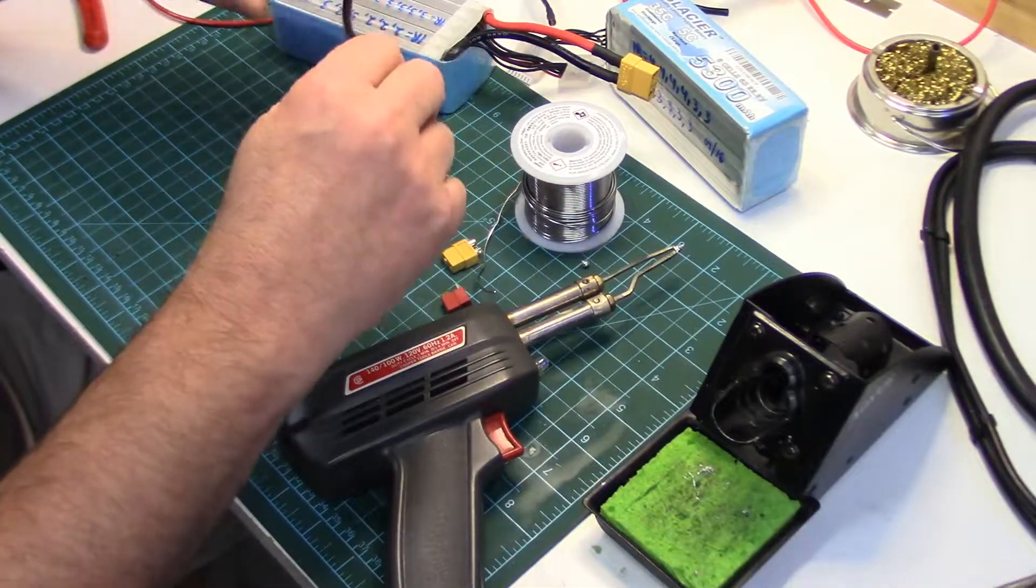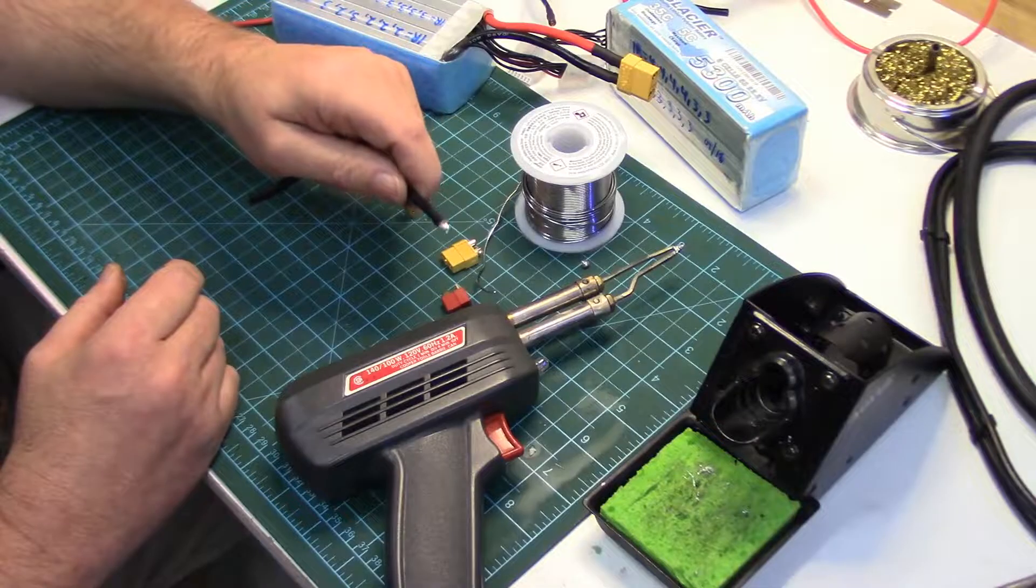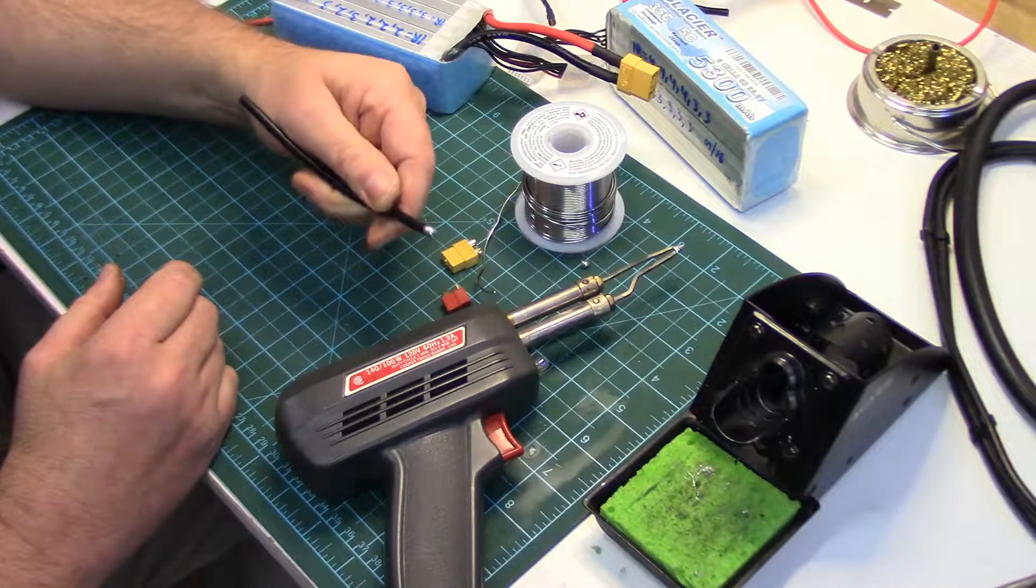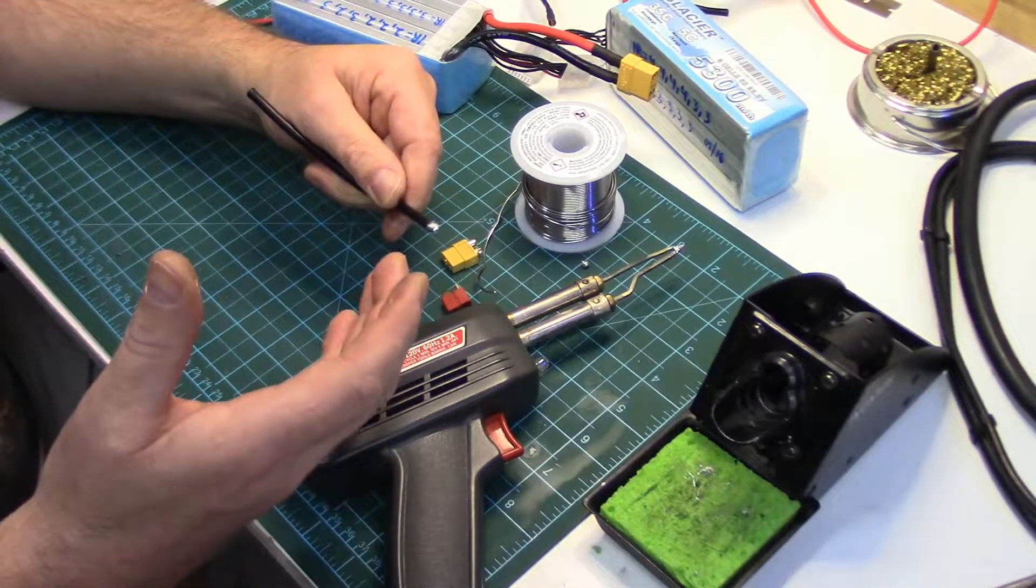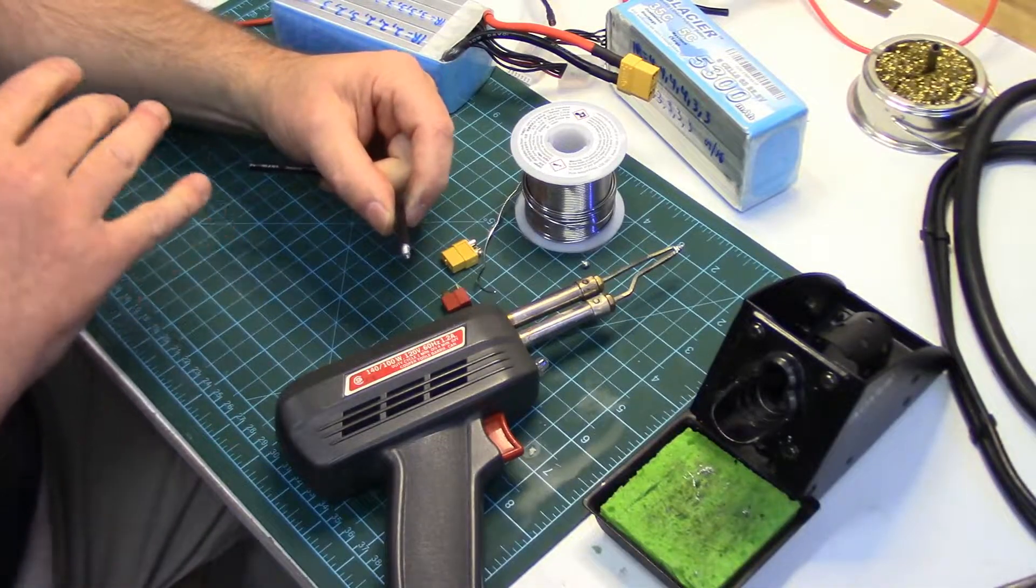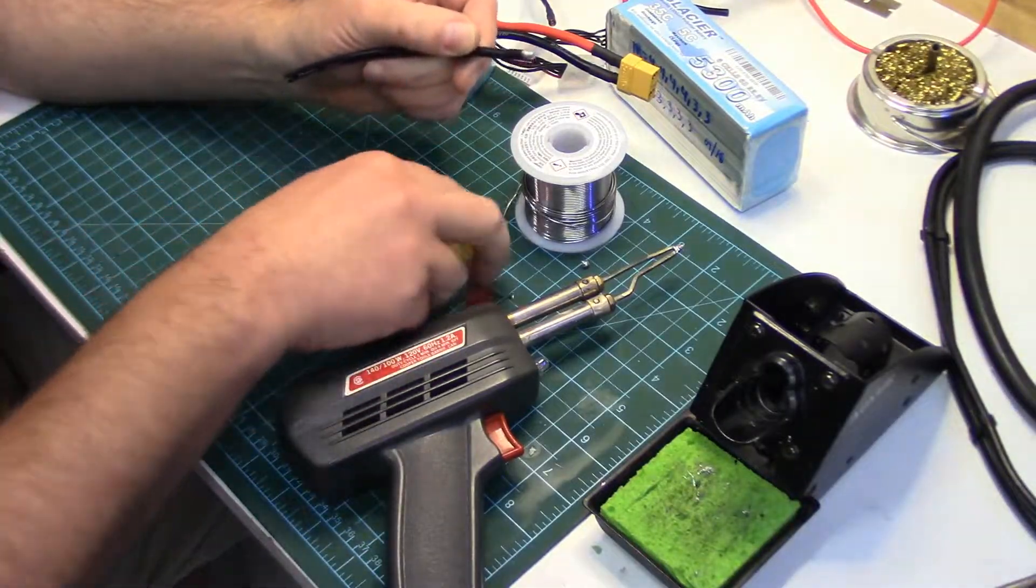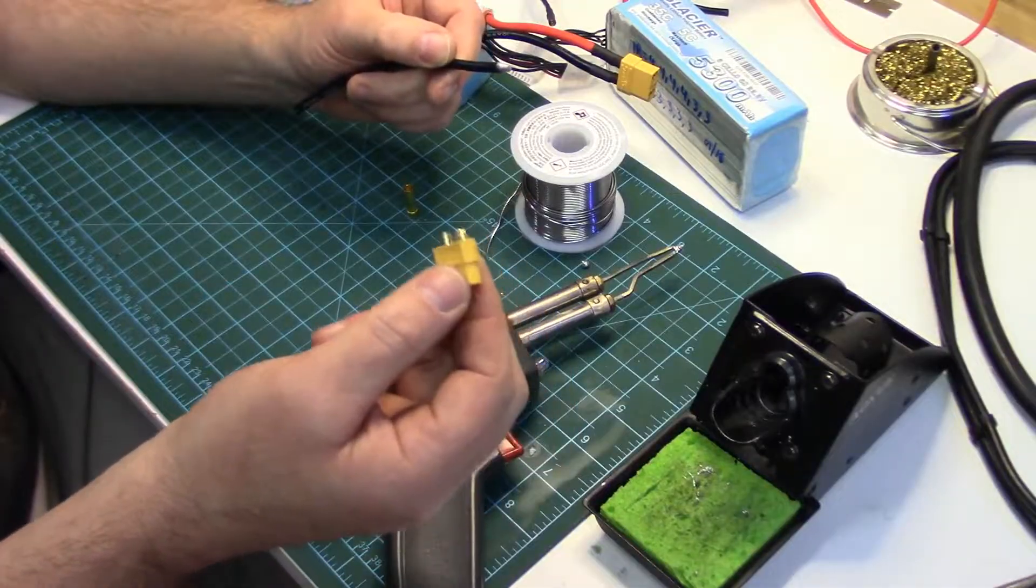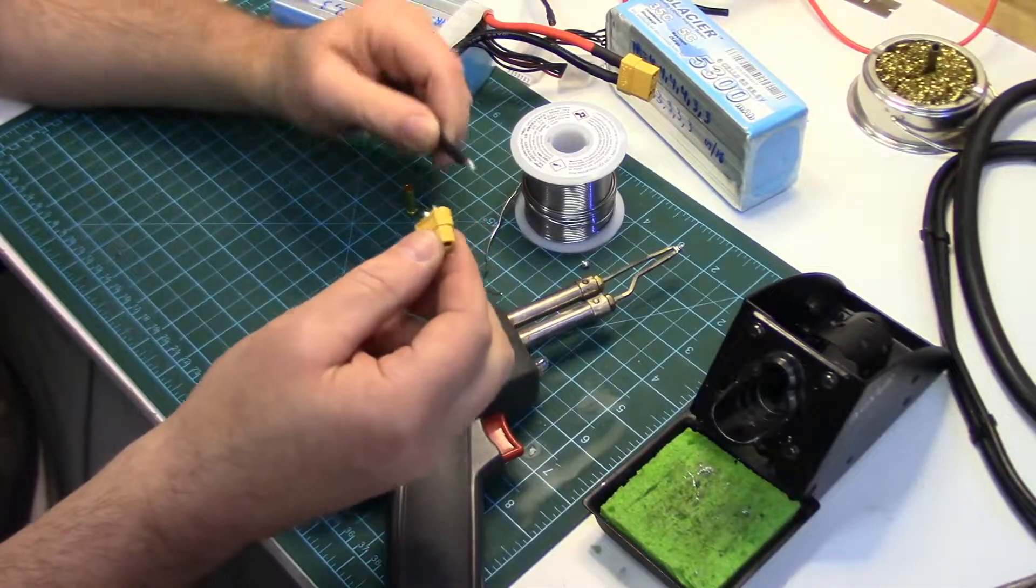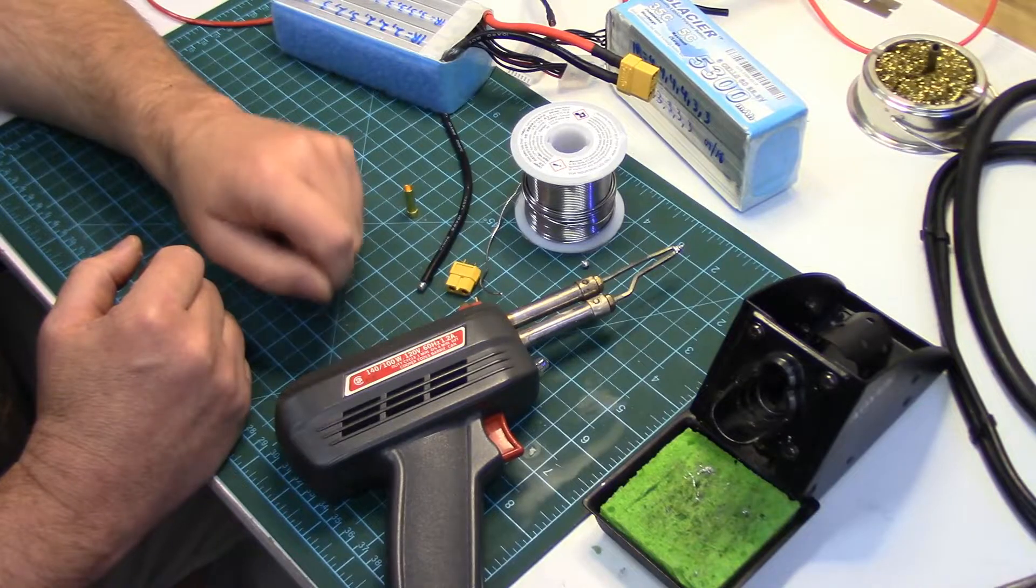So that is what's involved in tinning a wire. It's quite simple. But like anything, it takes practice, but it is the most important skill to learn in any of these videos. Tinning is the foundation of every video that is coming up on the connectors, soldering to the connectors. Hope that helped everyone. See you in the next video.